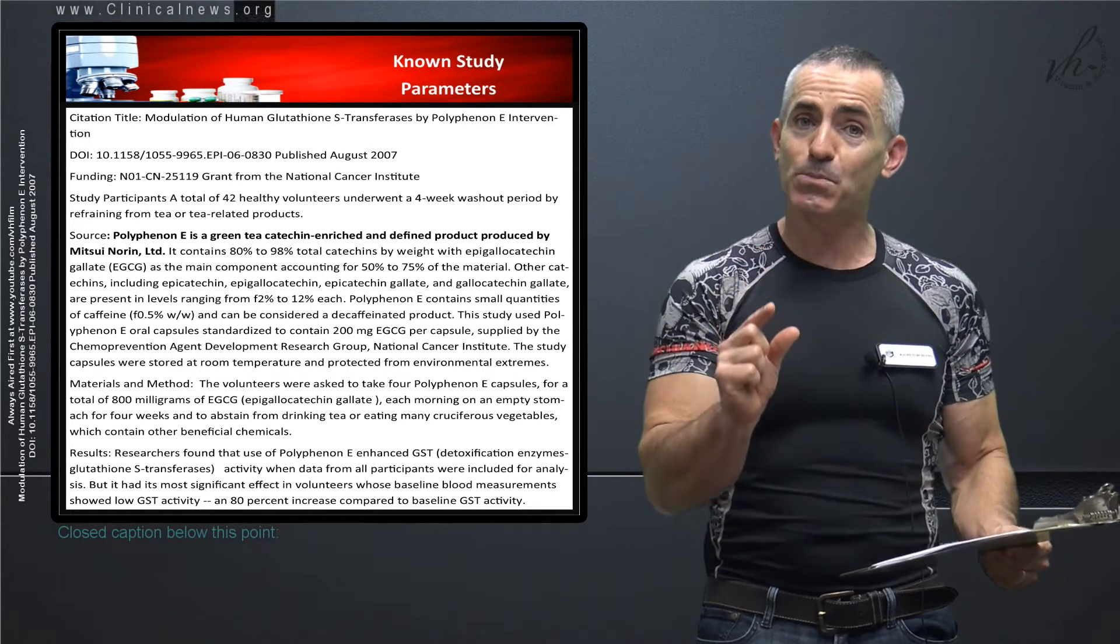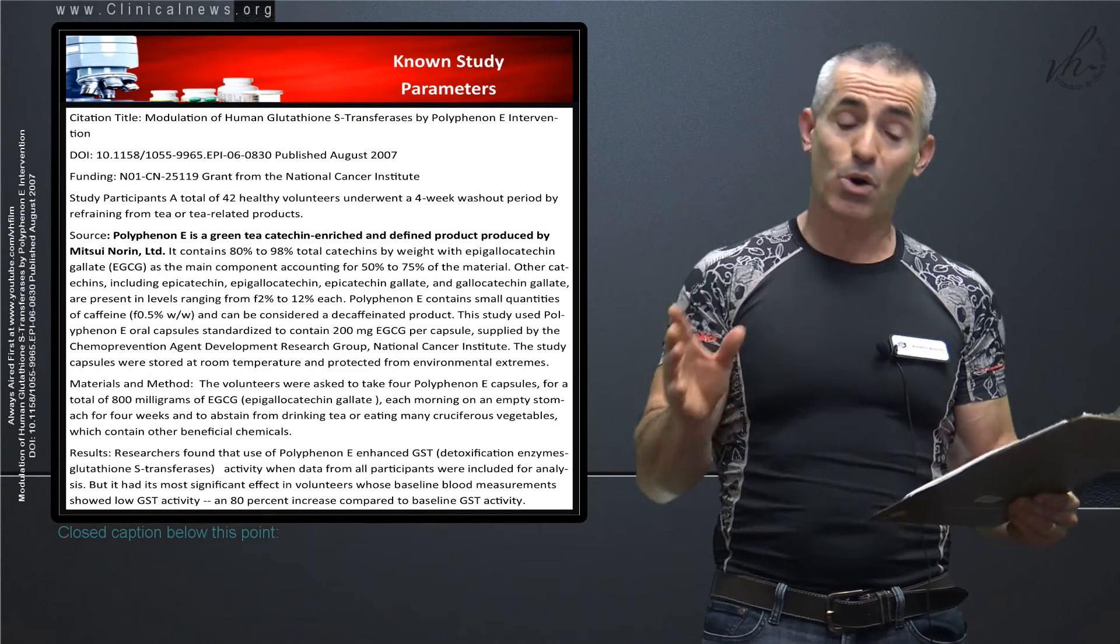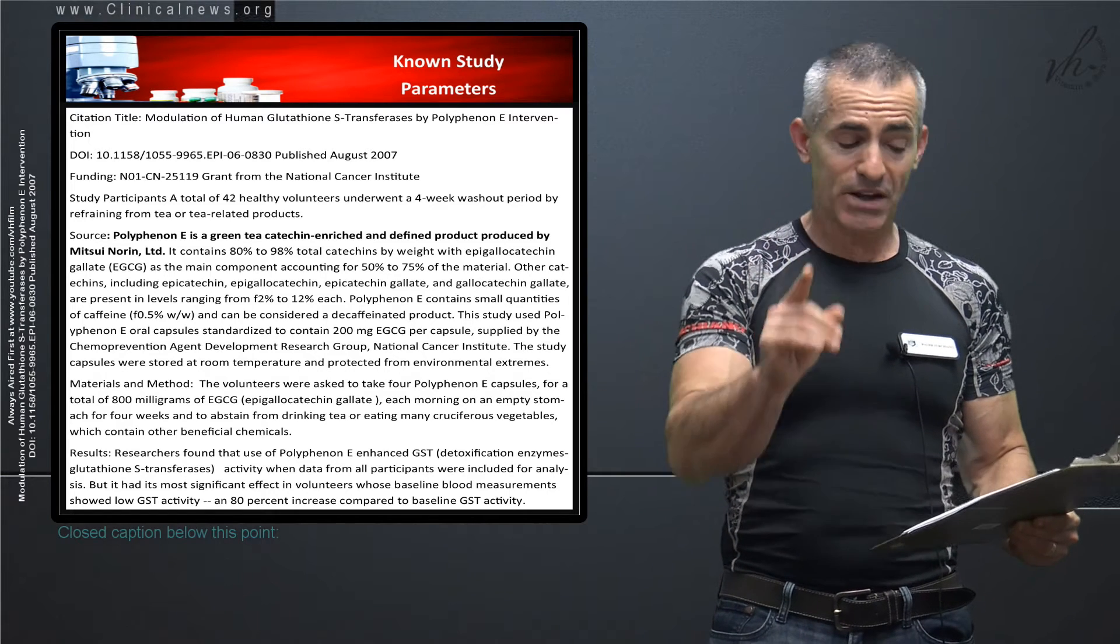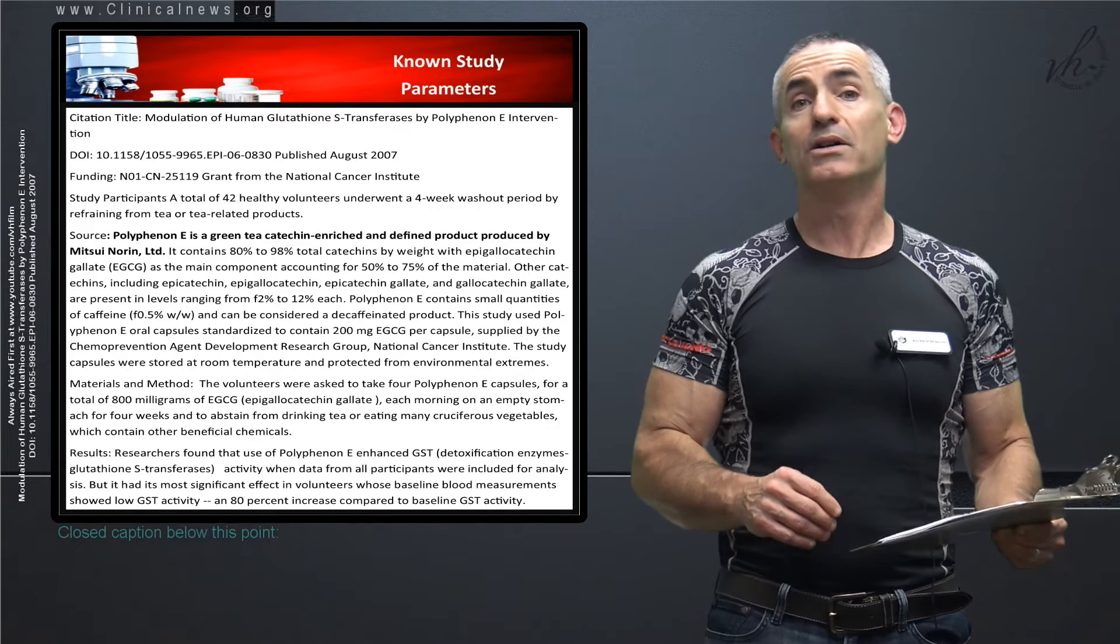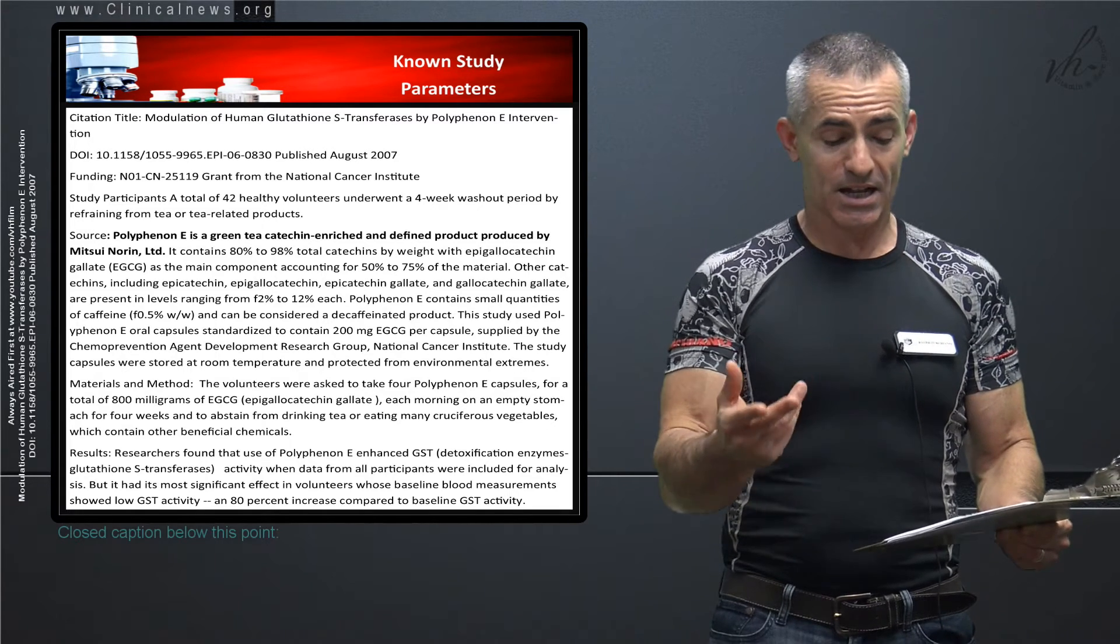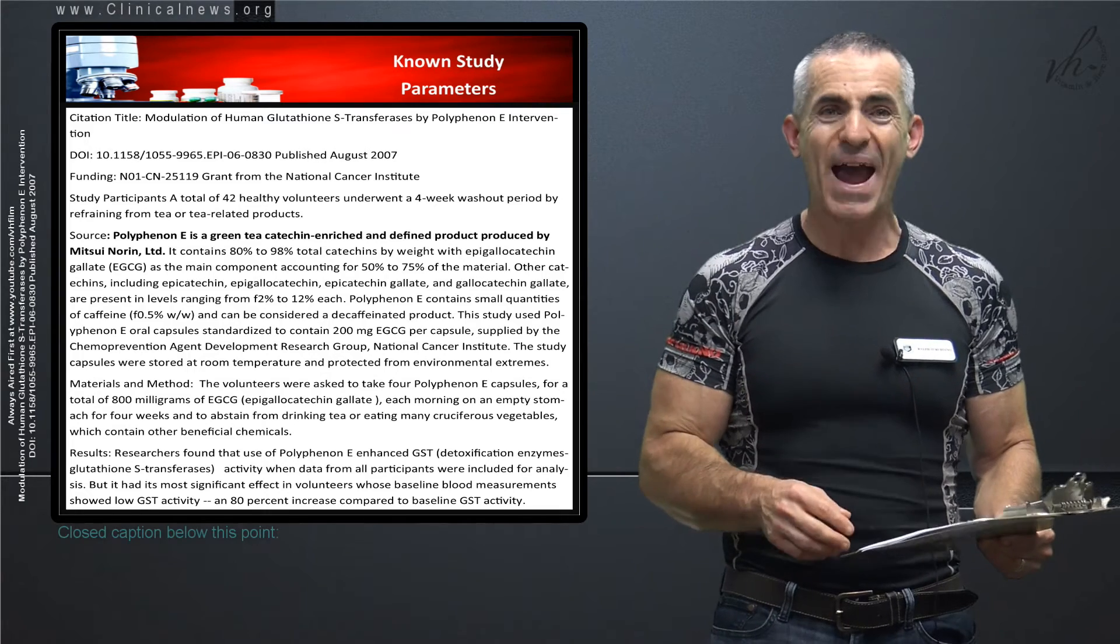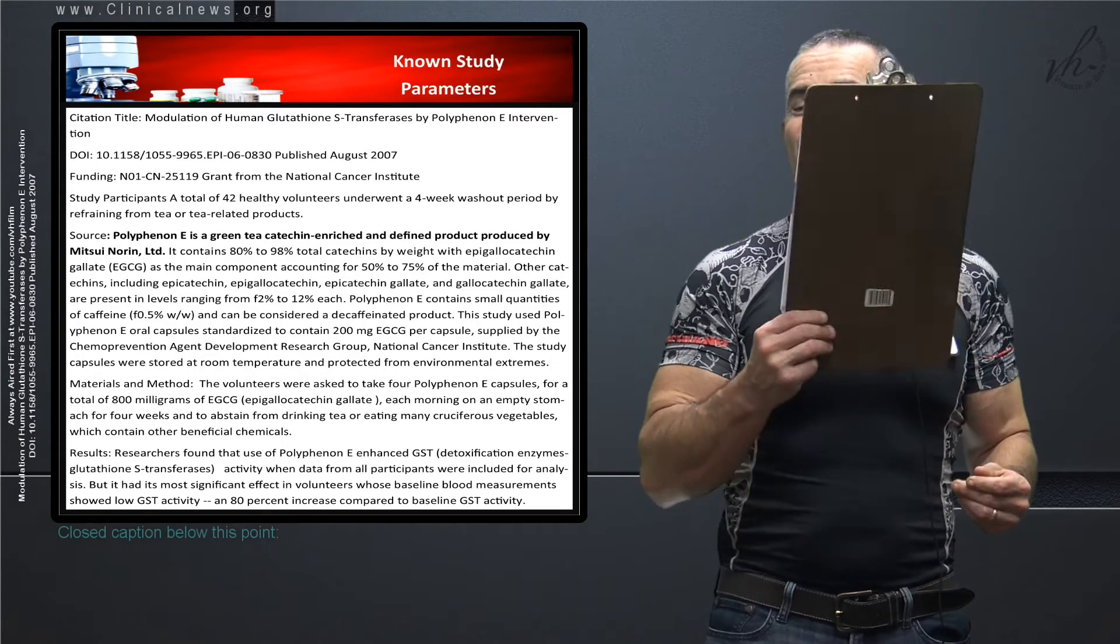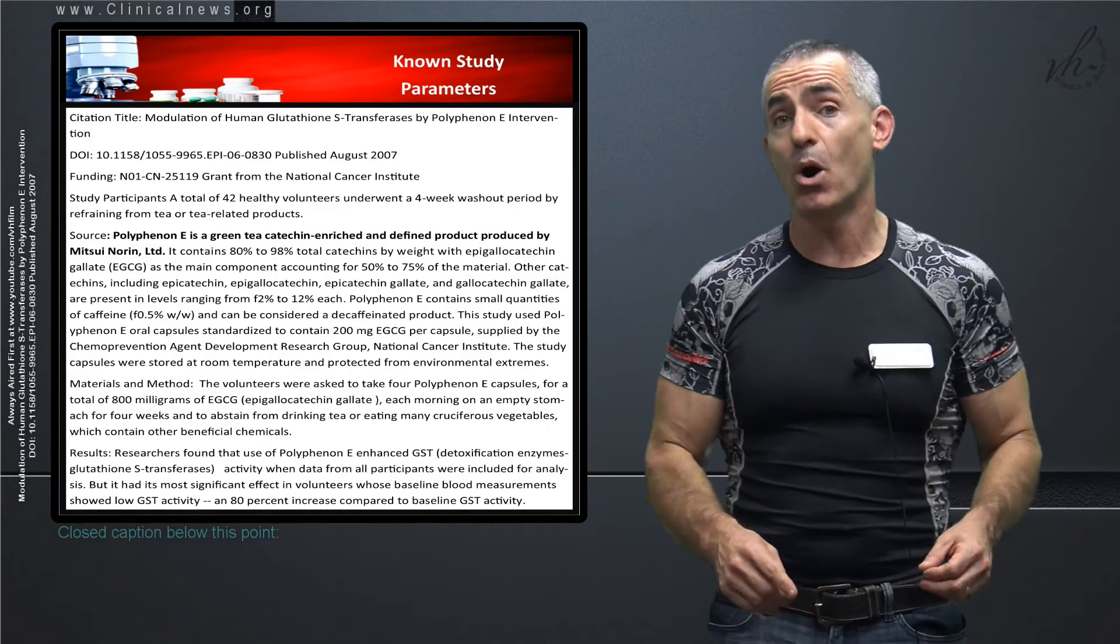But it had its most significant effect. Now keep in mind people that may be immunocompromised or just going through a hard time. It had its most significant effect in volunteers whose baseline blood measurements showed low GST activity. An 80 percent increase compared to baseline. Phenomenal. Just from something as simple as green tea or one of its components.